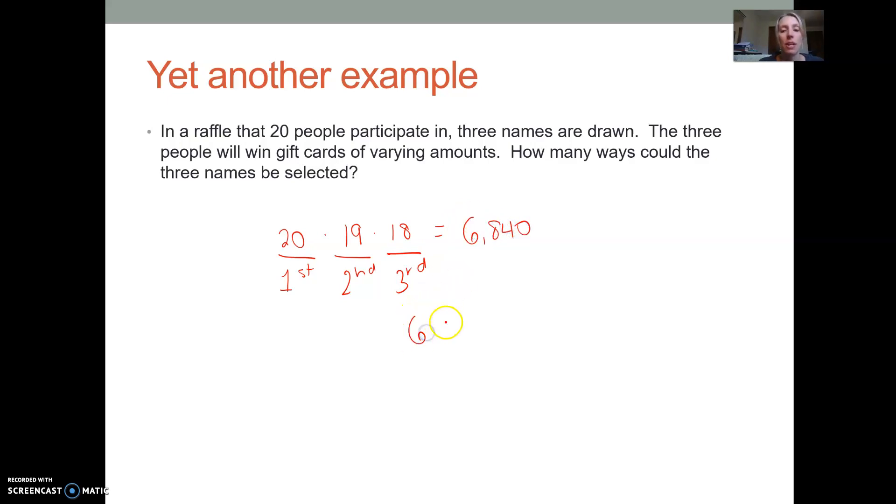So what this means is that there's 6,840 ways that the names could be drawn. So that could be anyone winning first prize, second prize, or third prize.